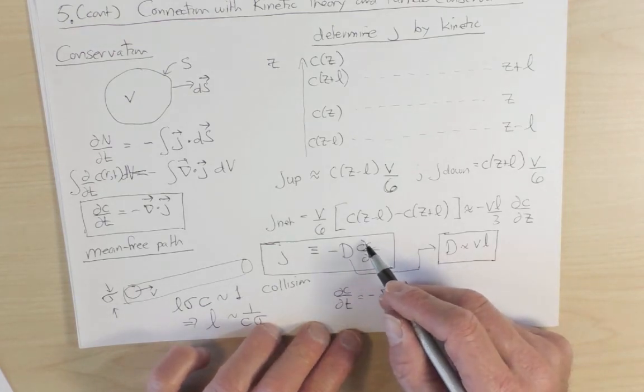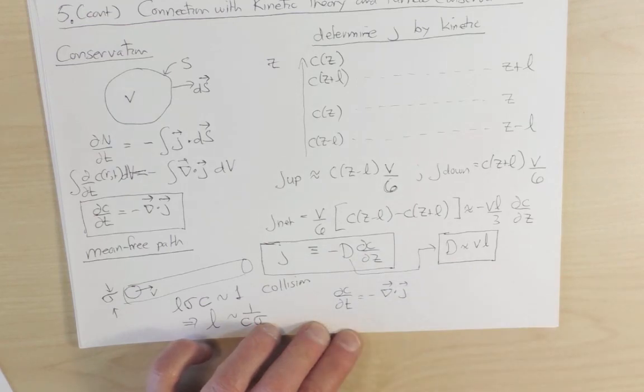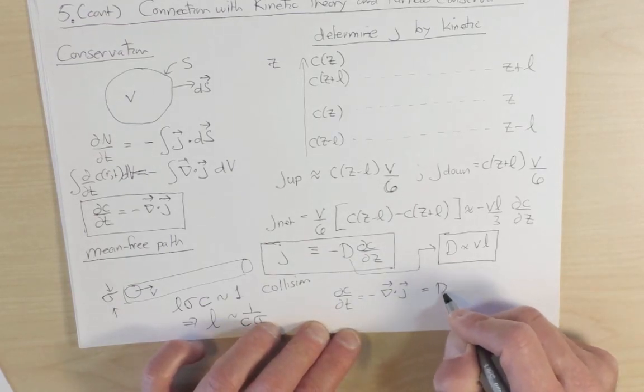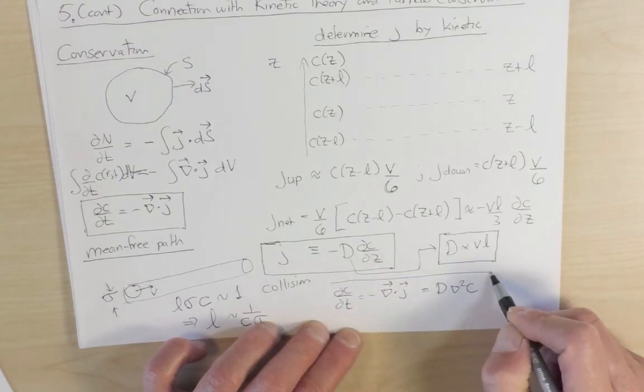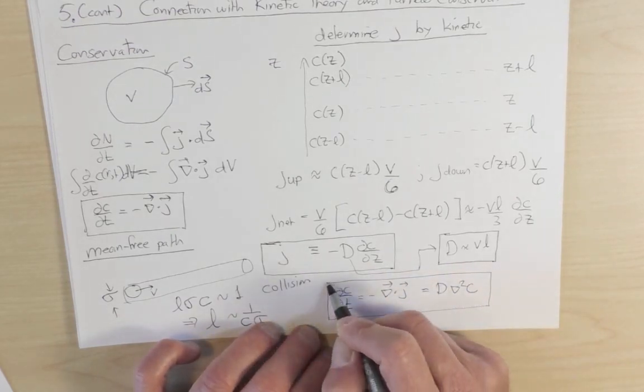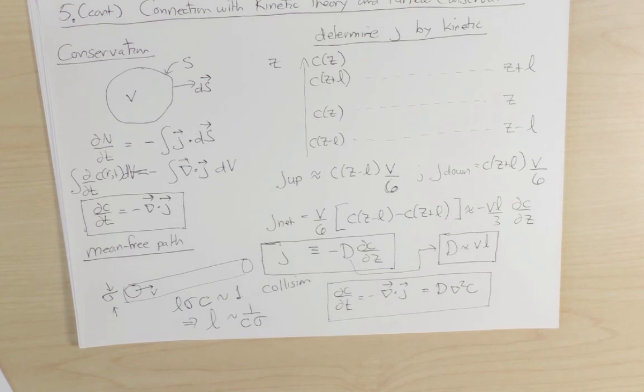And so in arbitrary dimensions, we replace dc by dz by the gradient of the current. And what we get here is d Laplacian of c. So this is a very rough microscopic derivation of the diffusion equation, starting with particle conservation and kinetic theory.